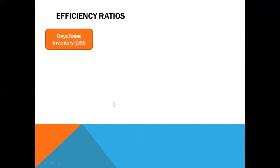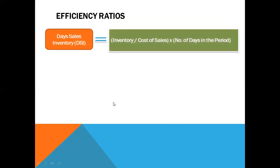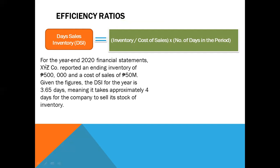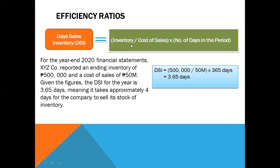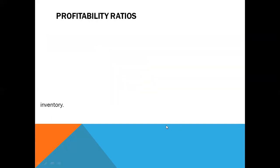Another efficiency ratio is days sales inventory (DSI), which equals inventory over cost of sales times the number of days in the period. For example, XYZ Company reported ending inventory of 500,000 pesos and cost of sales of 50 million pesos for 2020. The DSI is 500,000 divided by 50 million, times 365 days, equaling 3.65 days — meaning it takes approximately 4 days for the company to sell its stock of inventory.